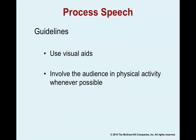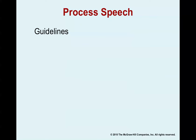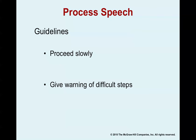Here are some guidelines for process speeches: use a ton of visual aids — people want to see what you're talking about. Involve the audience in the physical activity whenever possible. If you're talking about how to roll out pizza dough, bring some to class and have someone try to toss it in the air. Make sure you proceed slowly through the steps so we can fully understand. And if there is a step that is unusually difficult, give us a warning ahead of time — say something like 'here's a very difficult step, so be careful.' Process speeches are very informative.